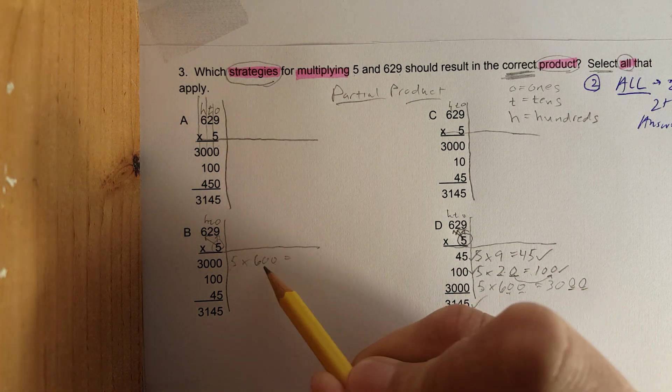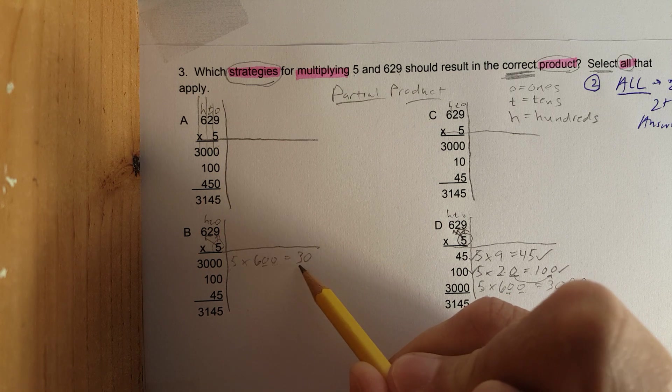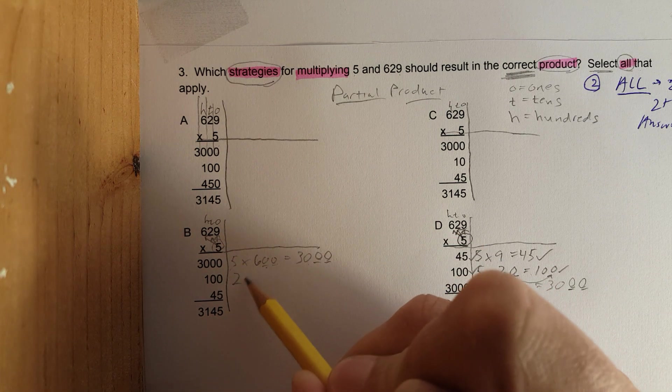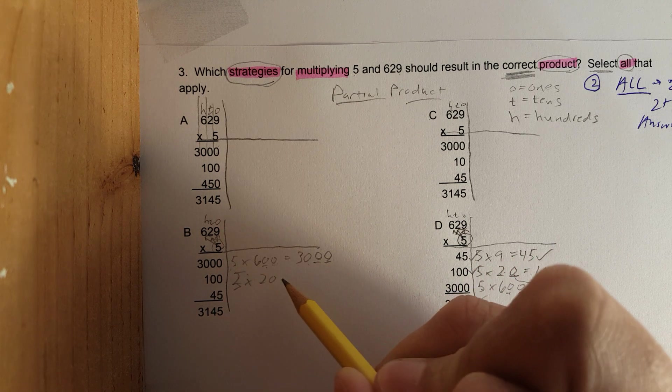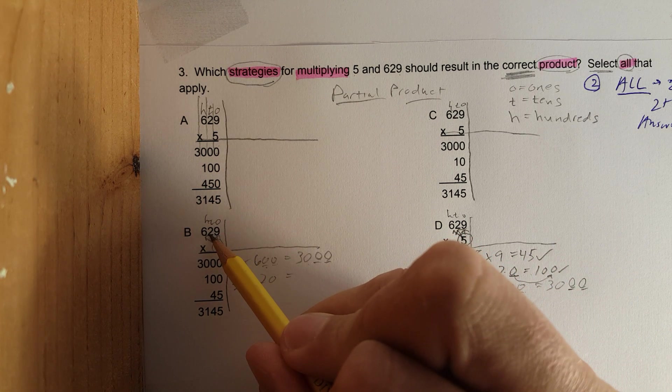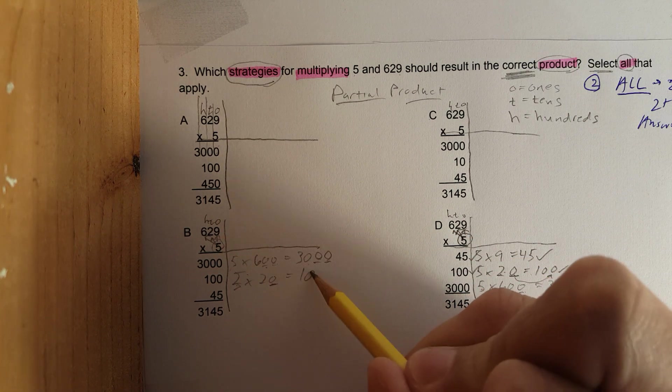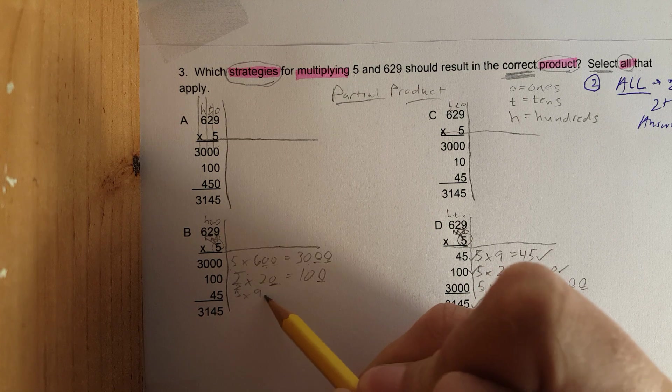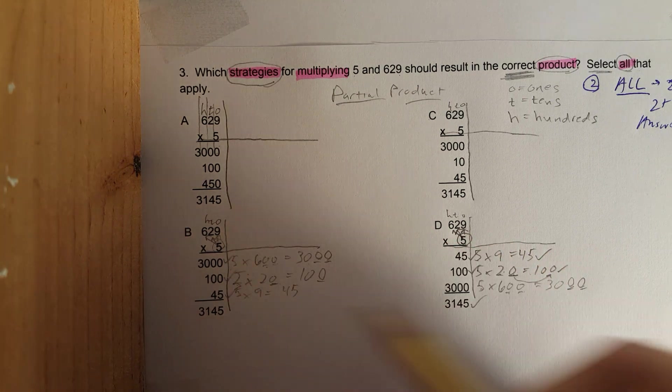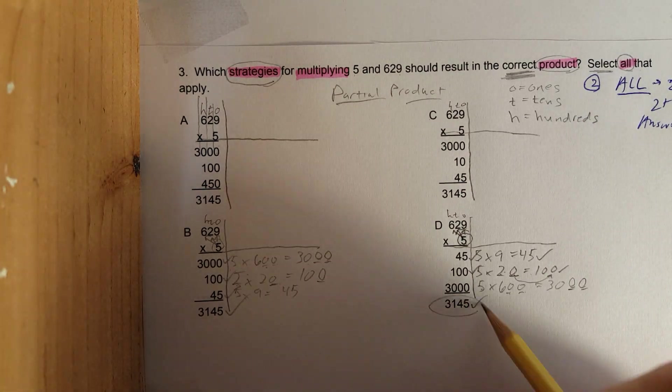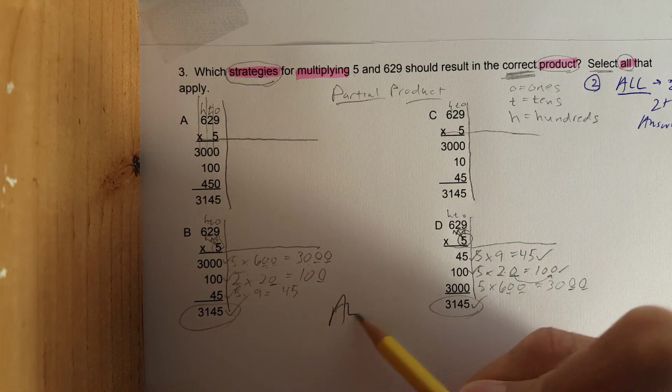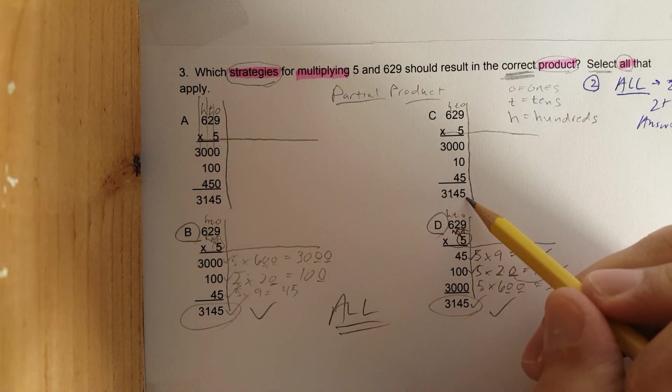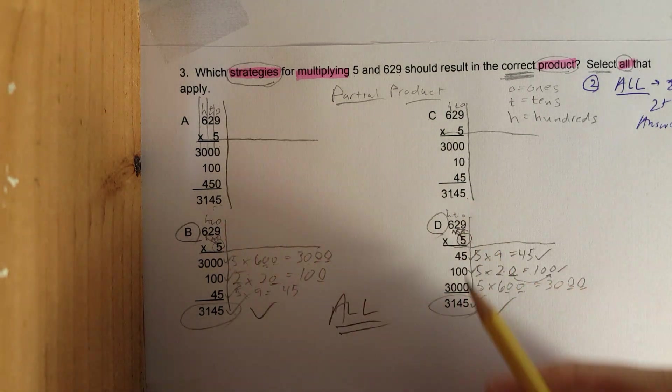Let's cruise over here. For this one they are starting with the hundreds place first, so they took 5 times 600, just as we did over here. 5 times 6 is 30, then we add two zeros. Next they go 5 times 20 - remember this is two tens, which is the same thing as 20. 5 times 2 is 10 and I add a zero. Then they go to the ones: 5 times 9 is 45. Check, check, check. Notice how these two answers are exactly the same.